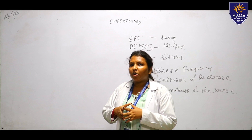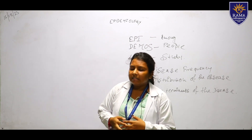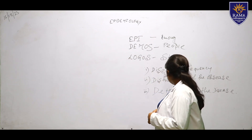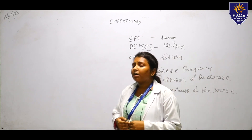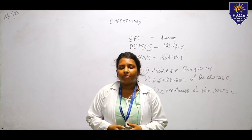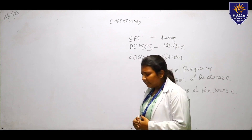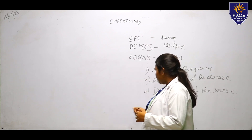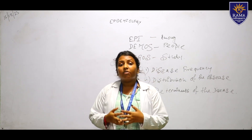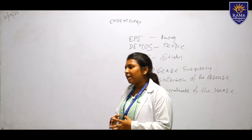Distribution refers to how a disease spreads from one state to another or one community to another. Determinants of the disease refer to the causes and hypotheses of the disease — for COVID, what are the reasons, the causes, and the risk factors — all of that comes under determinants.